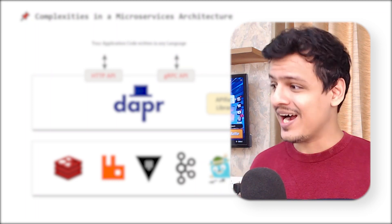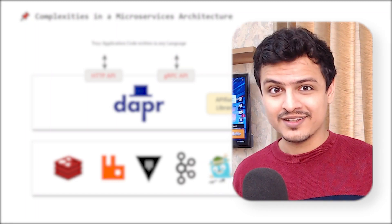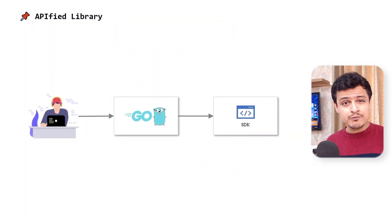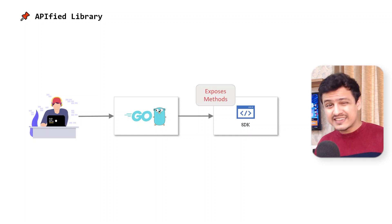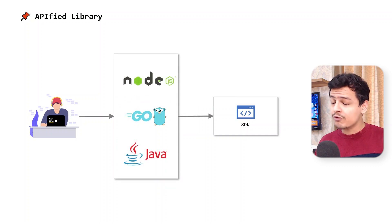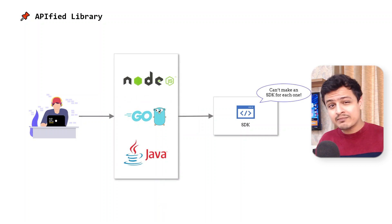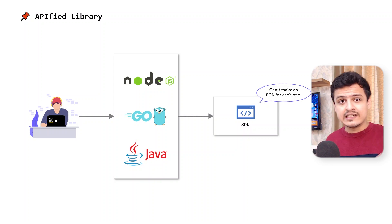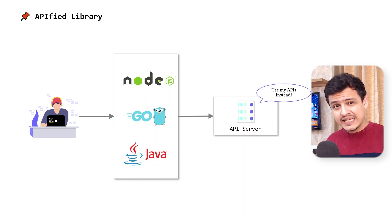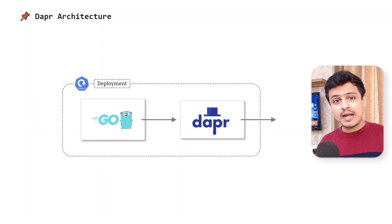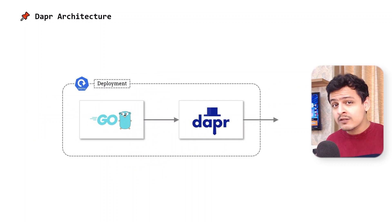What it gives us is a single appified library to rule them all. So whenever we use a library or SDK, we essentially use the methods it exposes. We don't really care about how that method is implemented as long as it gets the job done. But these days, programming languages are evolving rapidly, and it's not possible to make and maintain an SDK for each language. So instead of doing that, Dapr has created a server which acts as a library, and that server exposes a bunch of APIs which are its methods. So instead of packing a library within your app, you now ship your application along with Dapr's server as your sidecar.